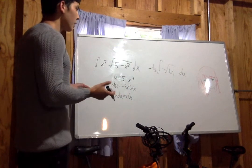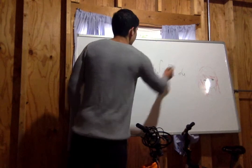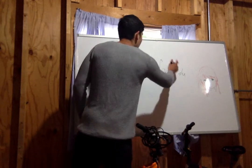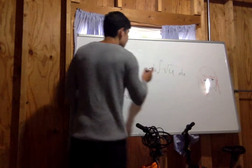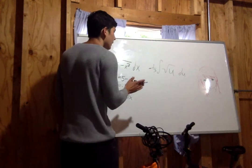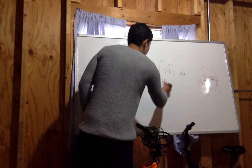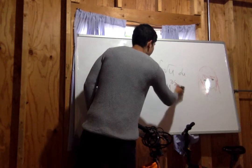Now use the power rule. This is to the power of 1 half. When you take an integral, you add 1 to the exponent and divide by that. So 1 half plus 1 is 3 halves, and you divide by that, giving you 2 thirds u to the 3 halves.